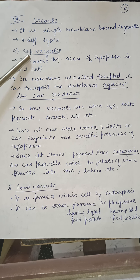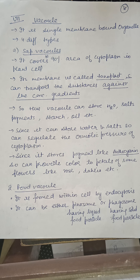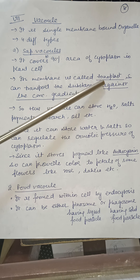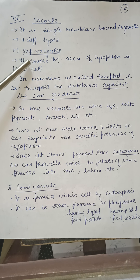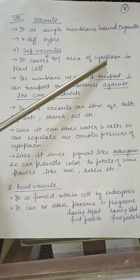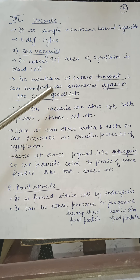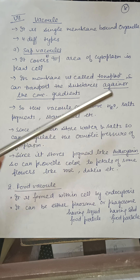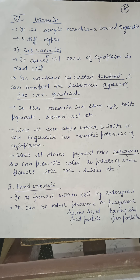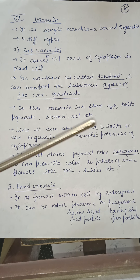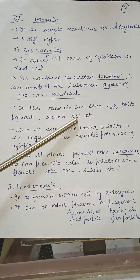The sap vacuole is found in plant cells and its membrane is known as the tonoplast. Sap vacuole covers 90% of the cytoplasm area in plant cells. Its membrane, the tonoplast, can transport substances against the concentration gradient. This vacuole can store water, salts, pigments, starch, oil etc.